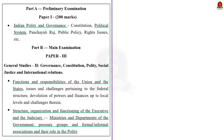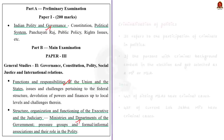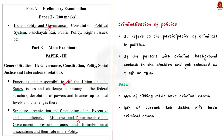Criminalization of politics refers to the participation of criminals in electoral politics — when a person with a criminal background contests an election and gets selected as an MP or MLA. In India, 44% of sitting MLAs and 43% of current Lok Sabha MPs have criminal cases. The first reason for this is the nexus between politicians and bureaucracy: some bureaucrats help politicians with criminal backgrounds come to power in exchange for postings of their choice, providing a pathway for criminals to enter politics.